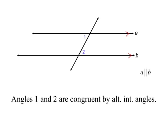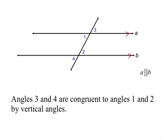We start by labeling a pair of alternate interior angles. We've just proven that if the lines are parallel, the two alternate interior angles are congruent. Now we add angles 3 and 4. Angle 3 is a vertical angle of angle 1, and angle 4 is a vertical angle of angle 2. By substitution, all four of those labeled angles are congruent.